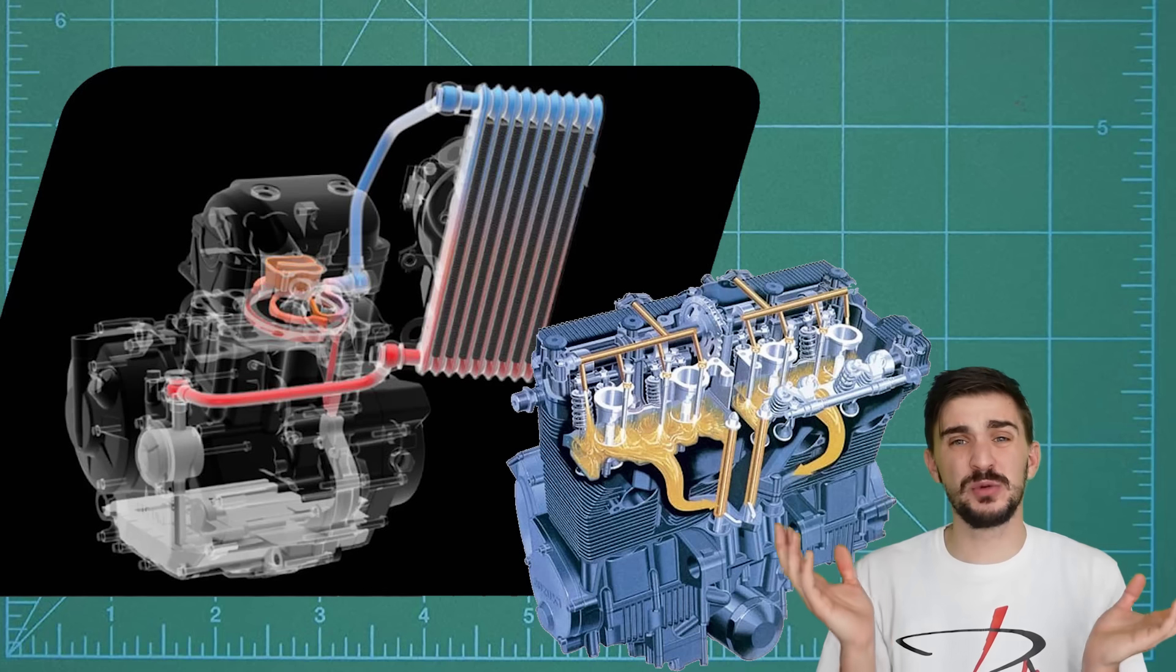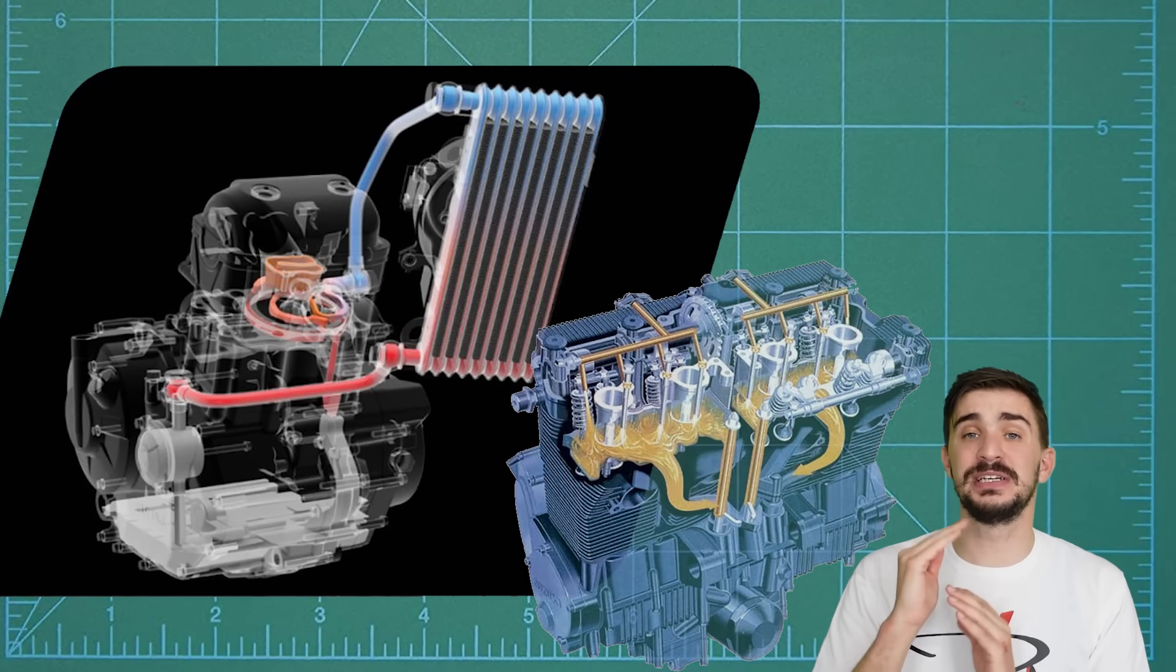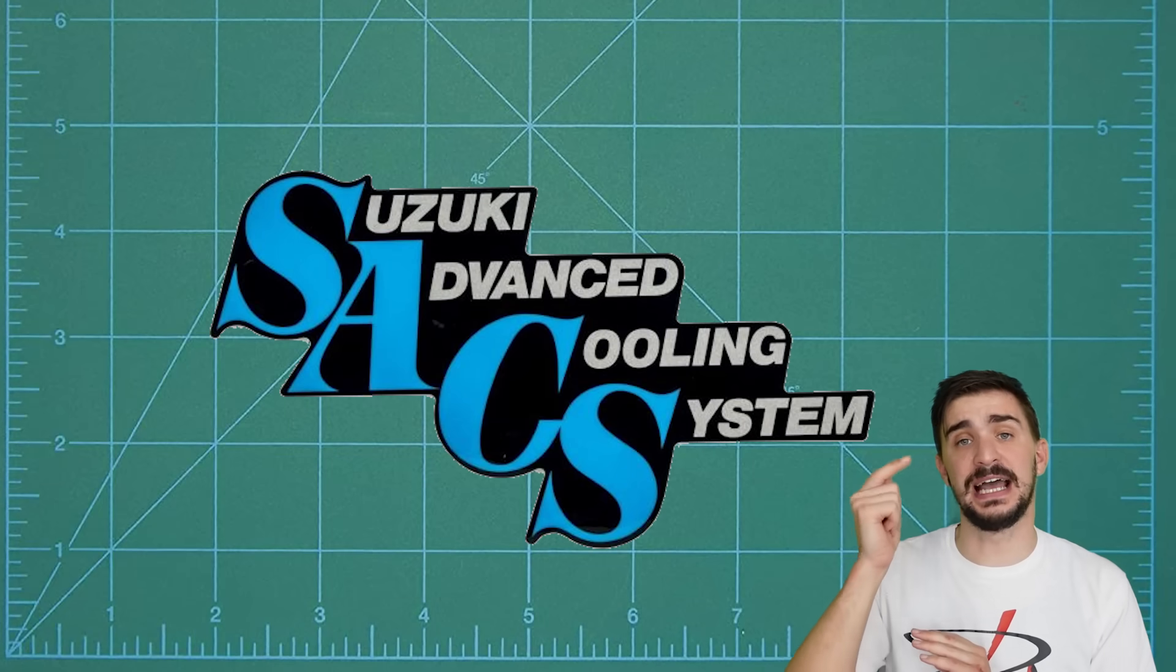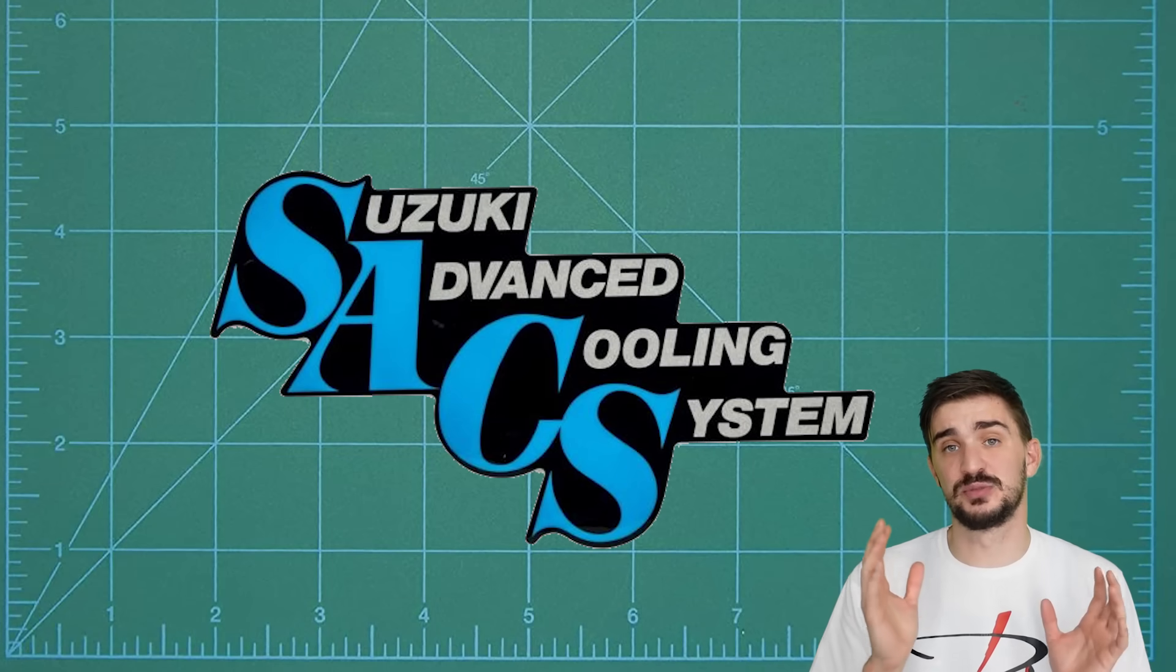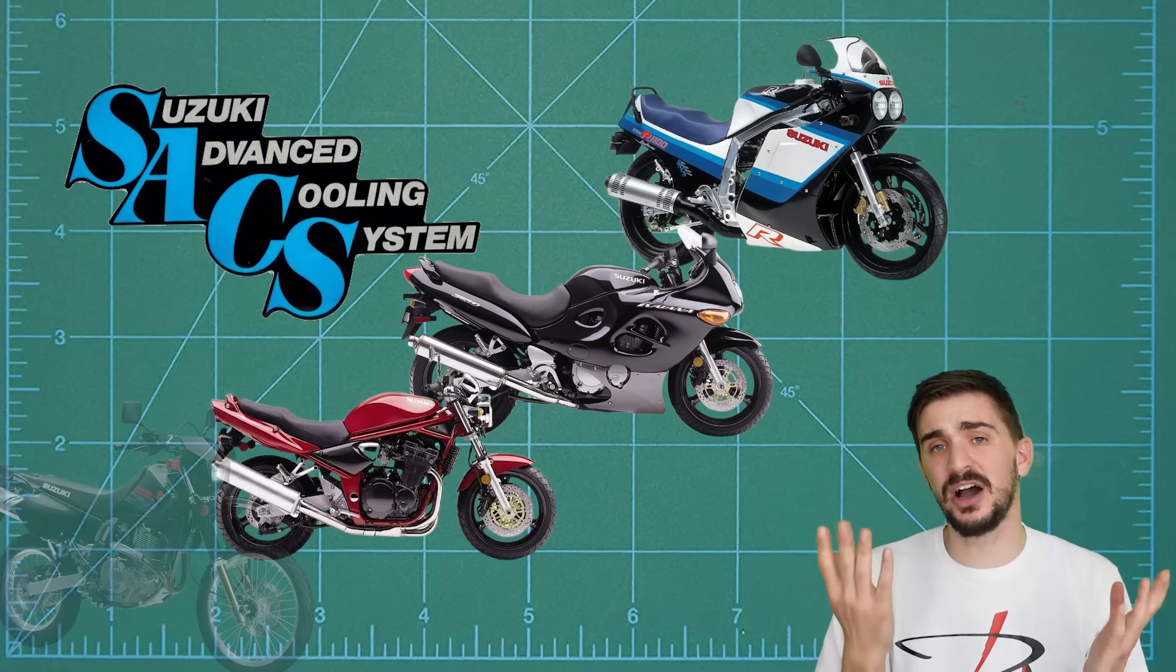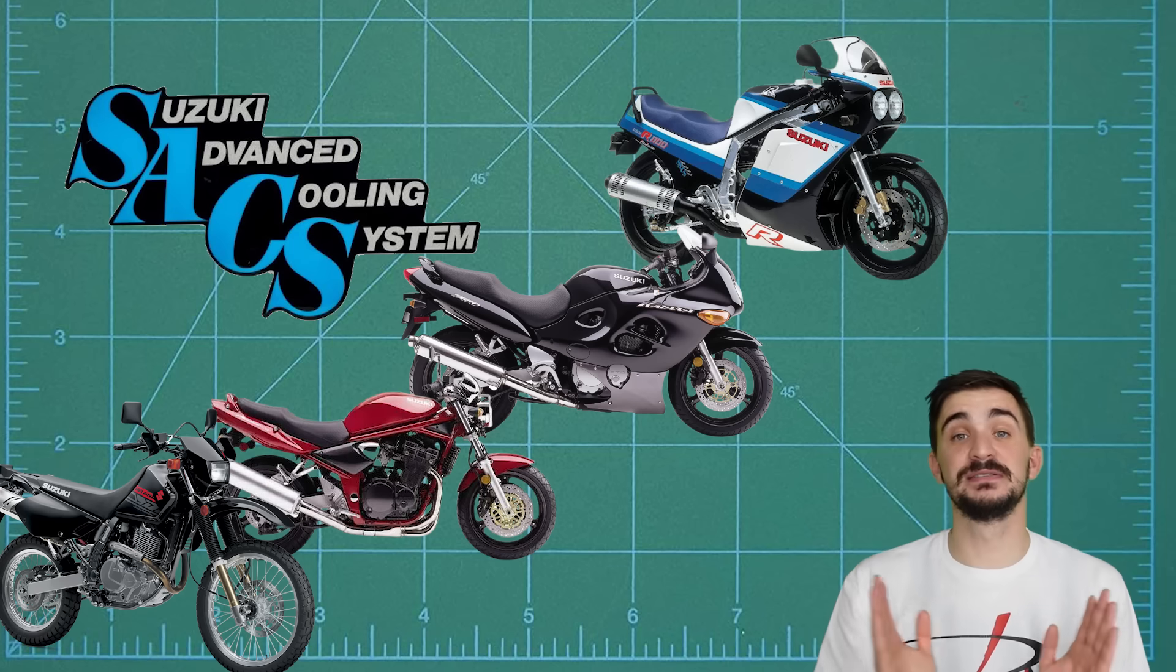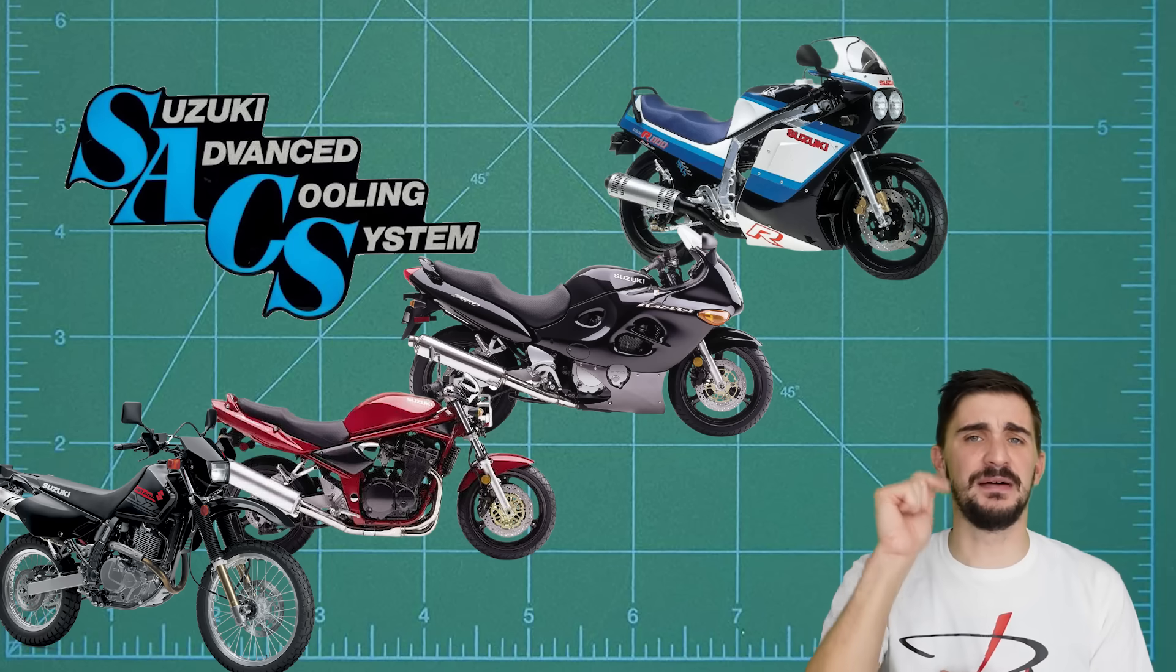Now one of the most widely known examples of oil-cooled engines has been manufactured by Suzuki for many years, and these are engines featuring their SACS or Suzuki Advanced Cooling System. This system was present on GSX-R as well as GSF Bandit, DR, and other Suzuki motorcycles. The increased oil capacity which reveals their oil-cooled nature is very obvious on these machines.